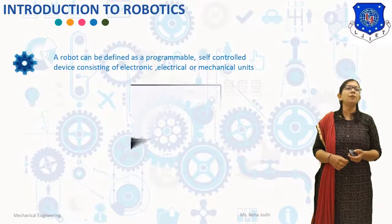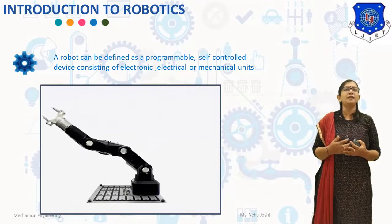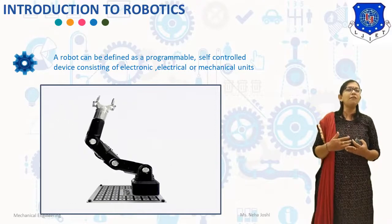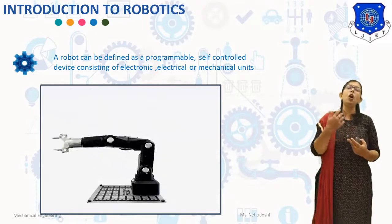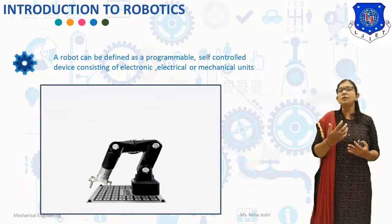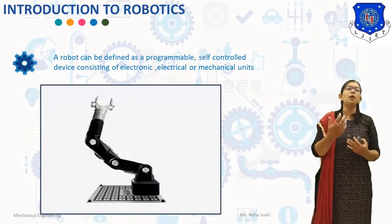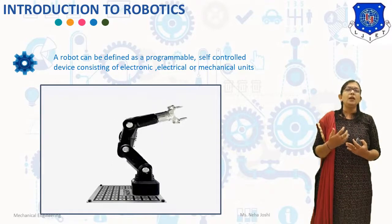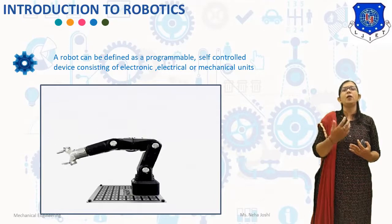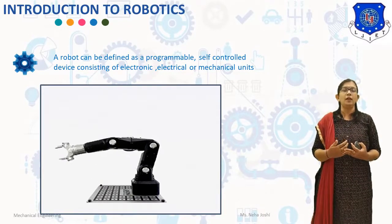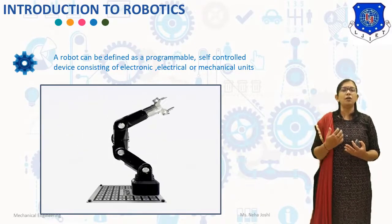First of all, what is a Robot? A robot can be defined as a reprogrammable self-controlled device consisting of electronic, electrical, or mechanical units. In other words, a robot is a mechanical apparatus designed to do the work of a man. Its components are usually electromechanical and are guided by a computer program or electronic circuitry. As you can see in the diagram, how robots work.